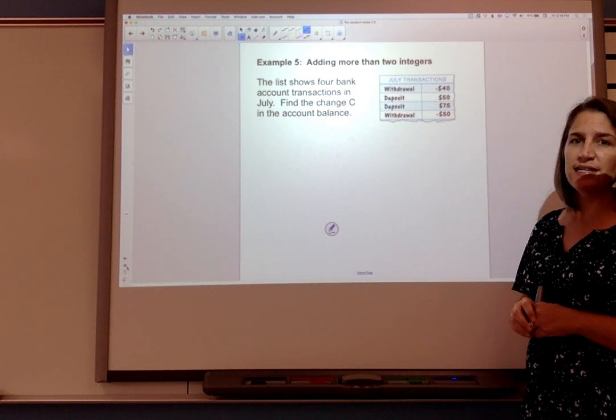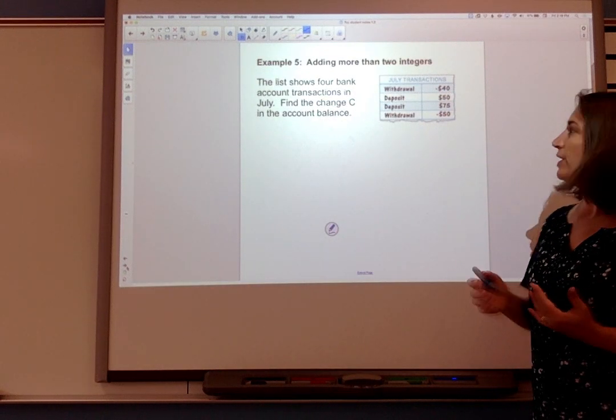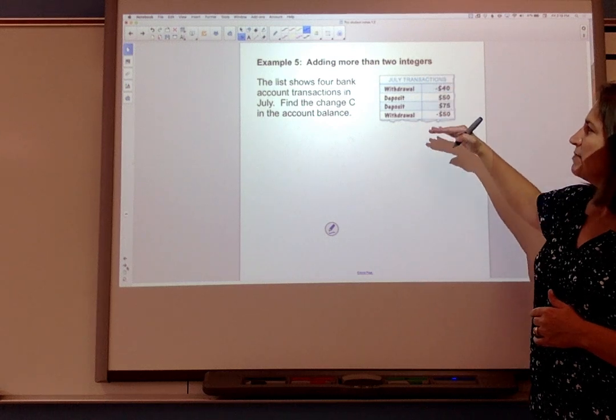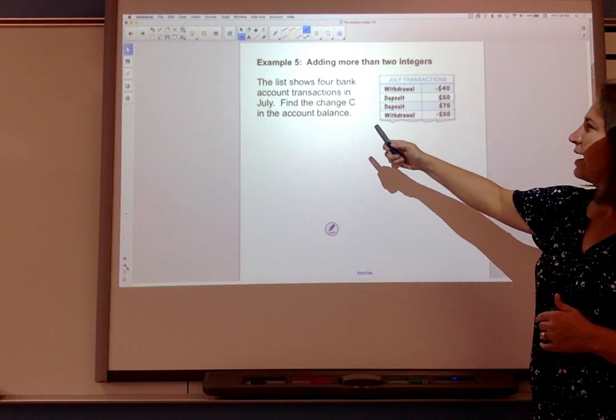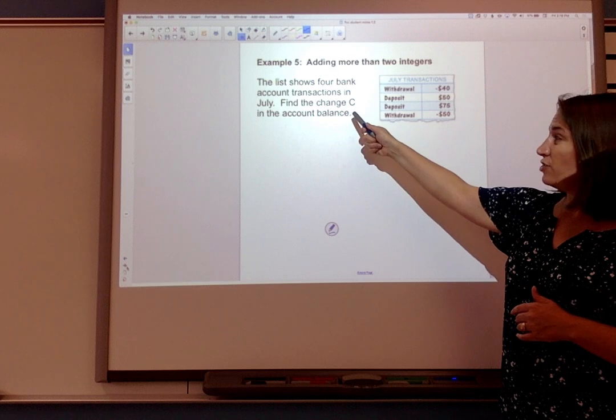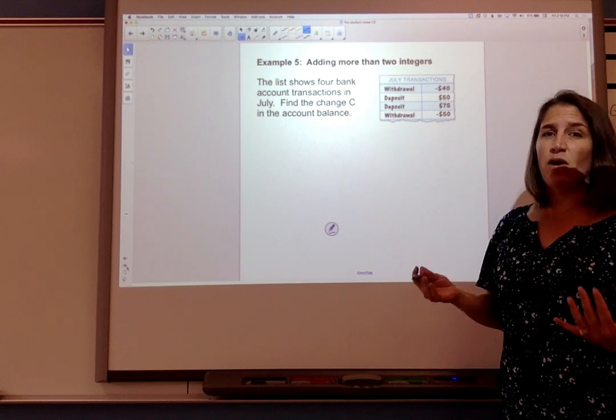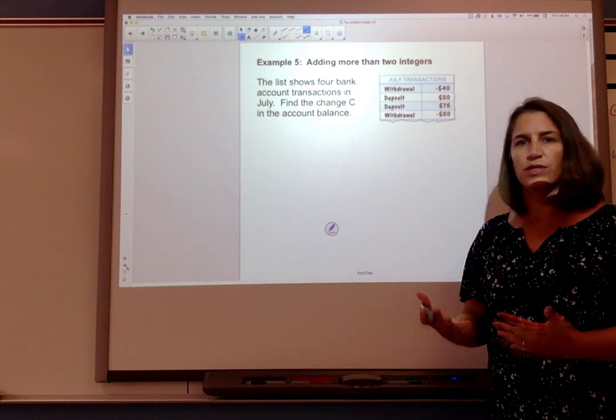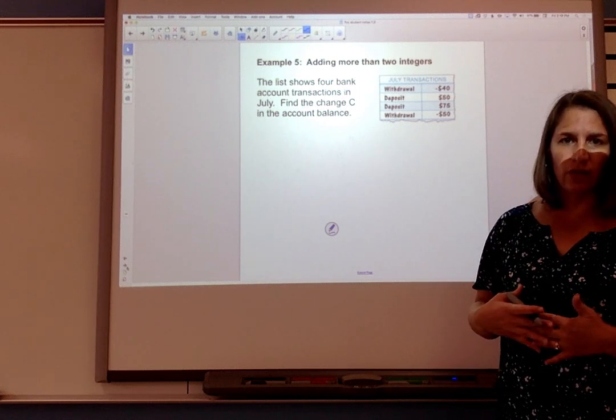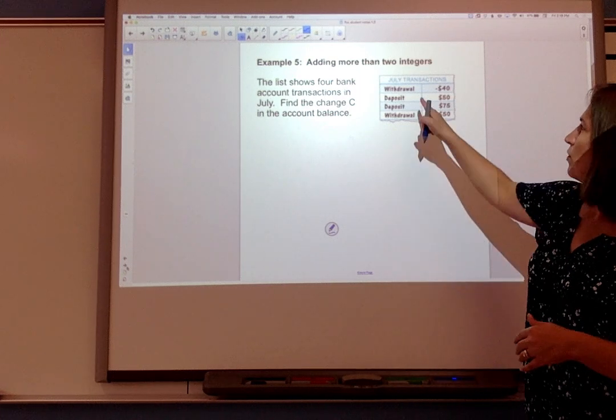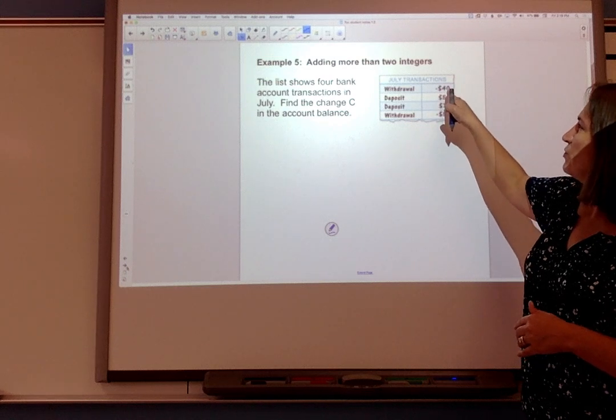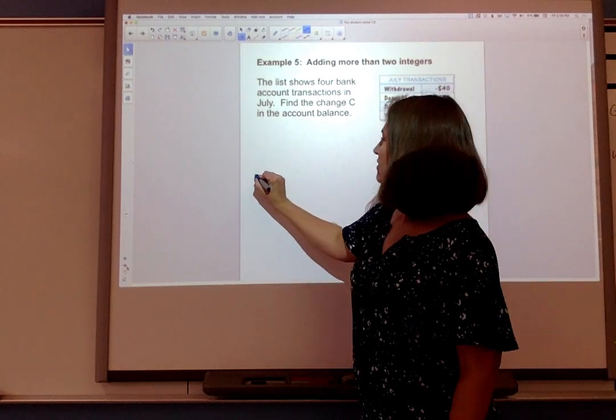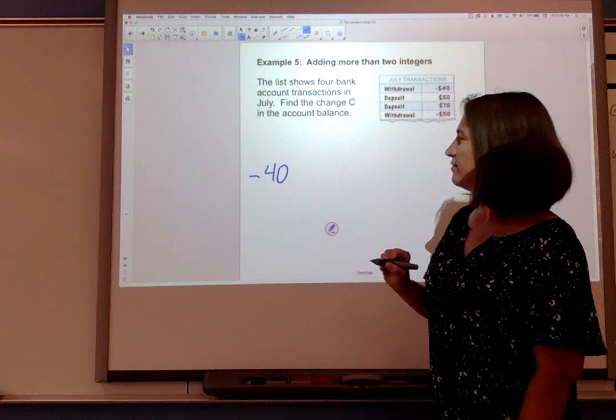So let's look at an example where we're adding more than two integers. Here we have this bank account and we want to find the change in the account balance after all of these transactions. So a transaction can be putting money in which is a deposit or taking money out which is a withdrawal. So first we've withdrawn $40. So that's -40. We've taken $40 out.